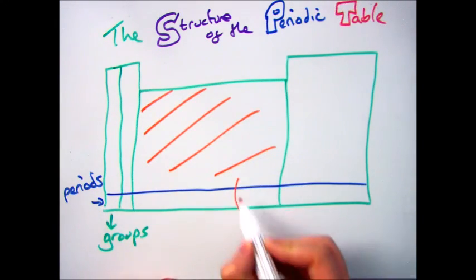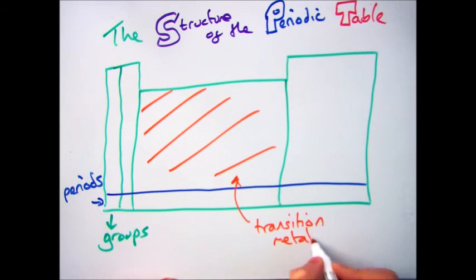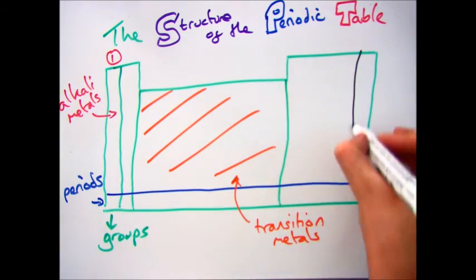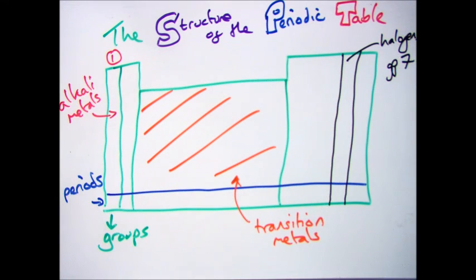What you also need to know is that the big block in the middle is called the transition metals. The first group, group 1, is called the alkali metals, group 7 is called the halogens and group 0 is known as the noble gases.